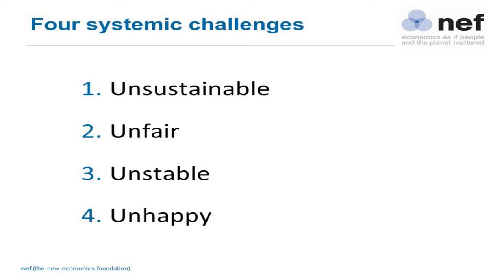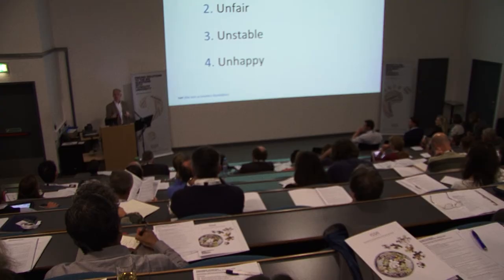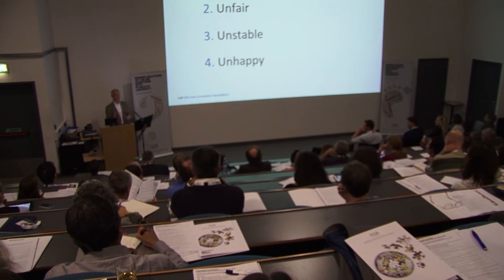First of all, a very simple analysis of what we see are the challenges in the world — there are four and they're all interlinked. The socio-economic system is unsustainable, and it's an equal problem that it's unfair — this is about the distribution of resources. Oxfam recently published a report showing the richest five families in the UK owned as much wealth as the bottom fifth, 12.5 million people. Such concentrations of wealth and income, as the Wilson and Pickett Spirit Level analysis shows, cause instability in the system.